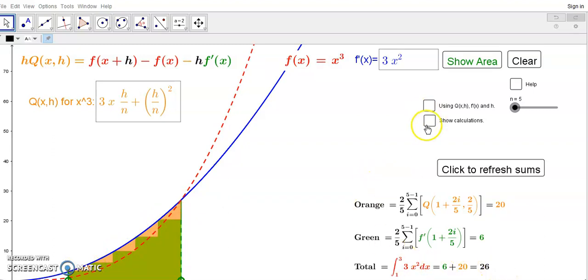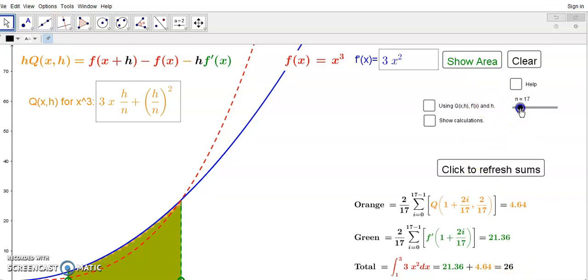And the sum will be 26 and I'm going to give you a link to this applet so that you can see that even though the areas might change when you use a different n, the sum will always be the same. It doesn't matter what is n, the sum remains the same.